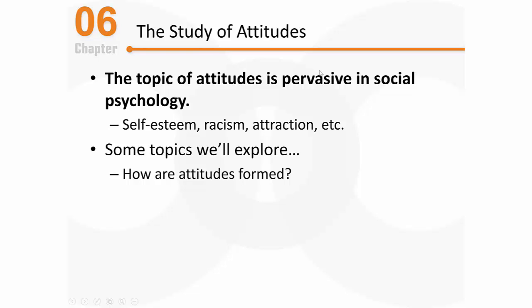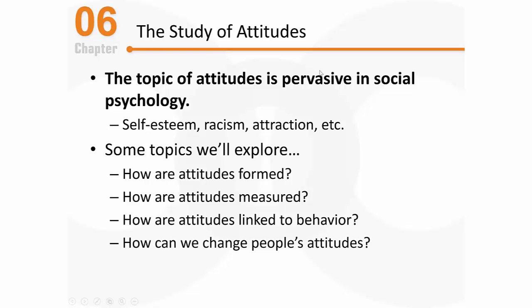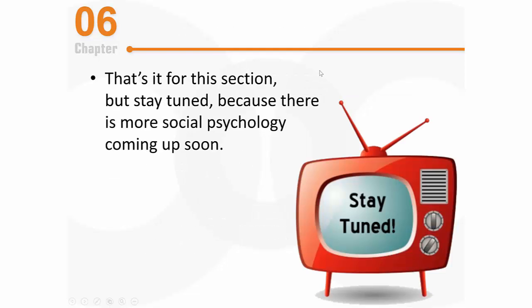In the remaining sections of this chapter, we'll answer a lot of really interesting questions: How are attitudes formed? How do we measure attitudes? How are attitudes specifically linked to behavior — because that link is actually very complex, not as straightforward as you might think. And how can we change people's attitudes? The bottom line is there are lots of great topics in this chapter.